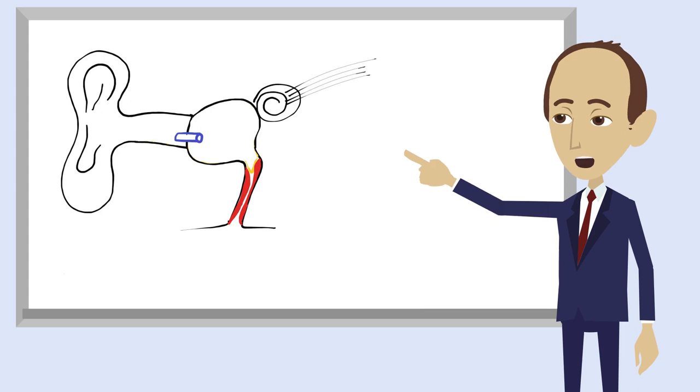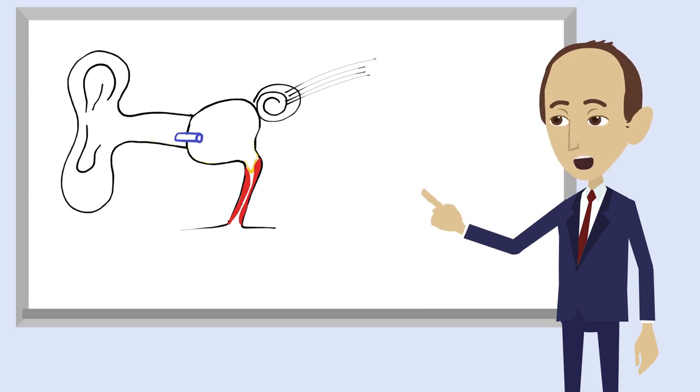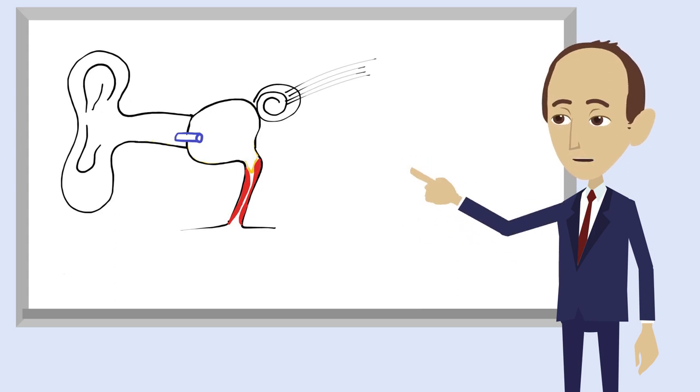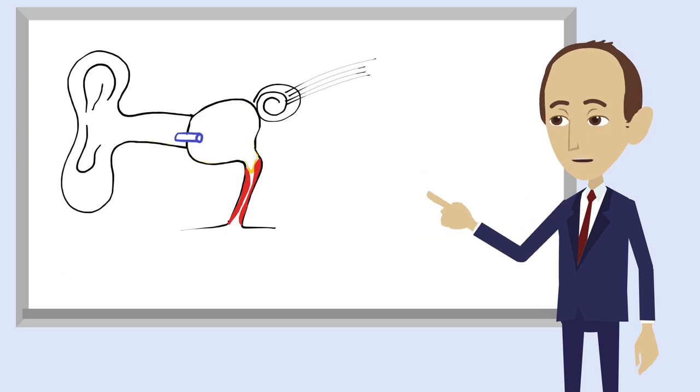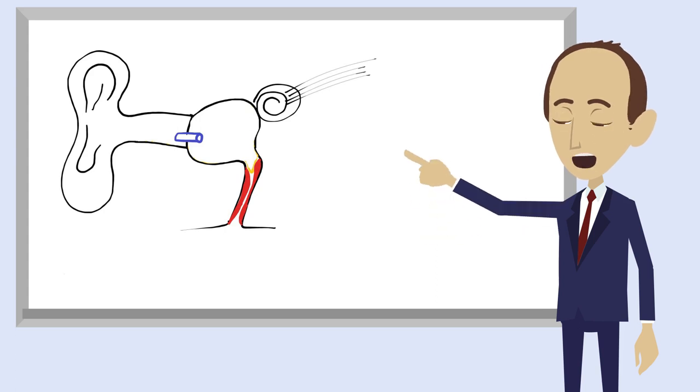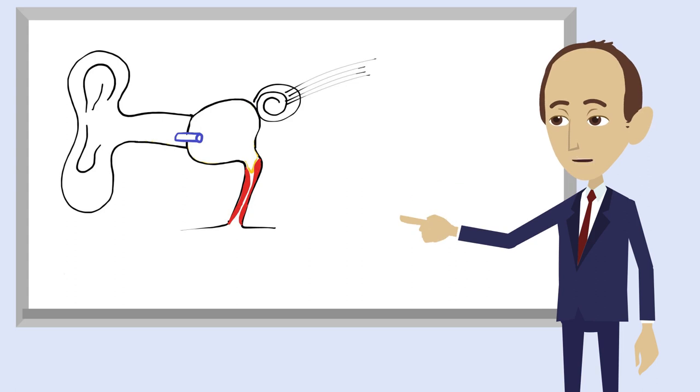Grommets are a great option for children as we are hoping that once they have grown up a little bit, the eustachian tube will increase in size and become unblocked. Grommets normally last for about nine to 18 months and then they fall out.